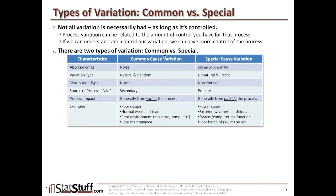Common cause variation is also known as noise. It reflects the type of variation that is natural or random, and would normally be represented as a normal distribution. This type of variation is a secondary source of process pain — not the primary source, but still something we want to get resolved, especially when it doesn't fall in line with the customer's requirements or the voice of the customer. It generally occurs within the process itself. Examples include poor process design, normal wear and tear, poor environmental conditions like moisture or temperature, and poor maintenance of equipment used in the process.